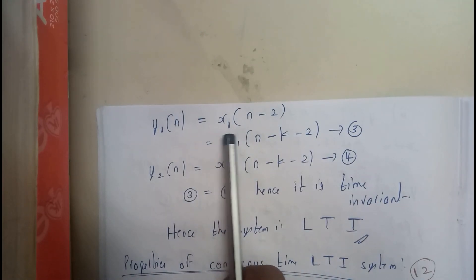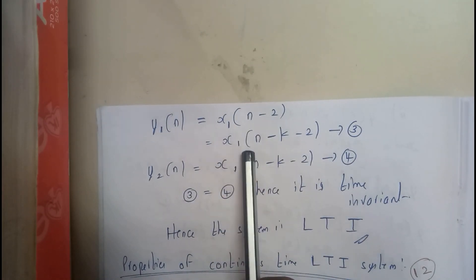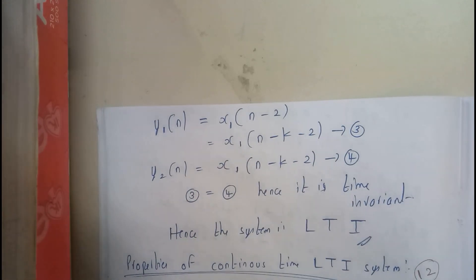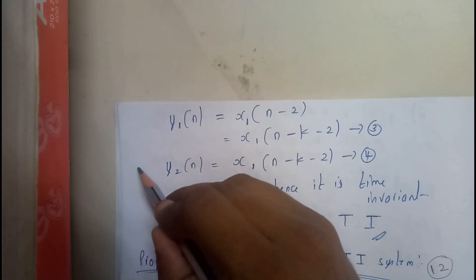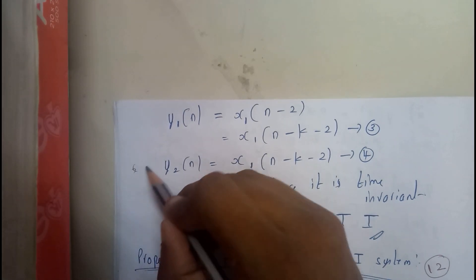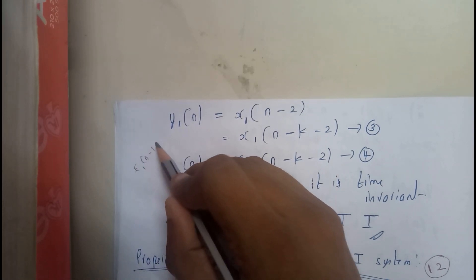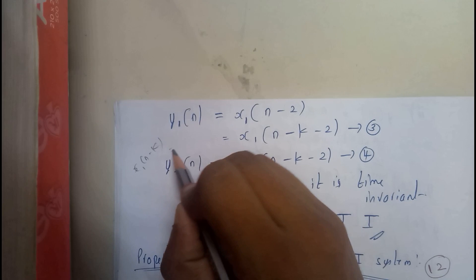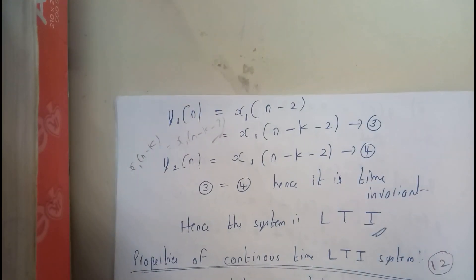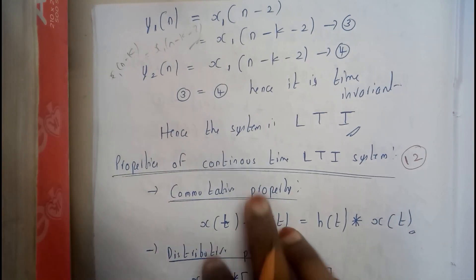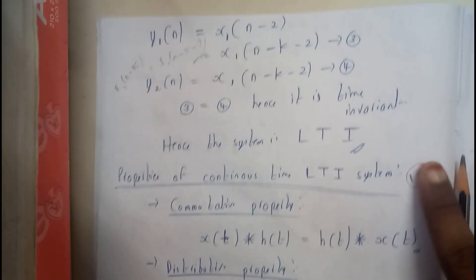We also need to check time variance for this example. First, substituting n minus k directly gives X(n − k − 2) as our first equation. In the second case, we delay first — X1(n) becomes X1(n − k) — and then pass through the system, giving X1(n − k − 2). Both results are equal, so it is a time invariant system.